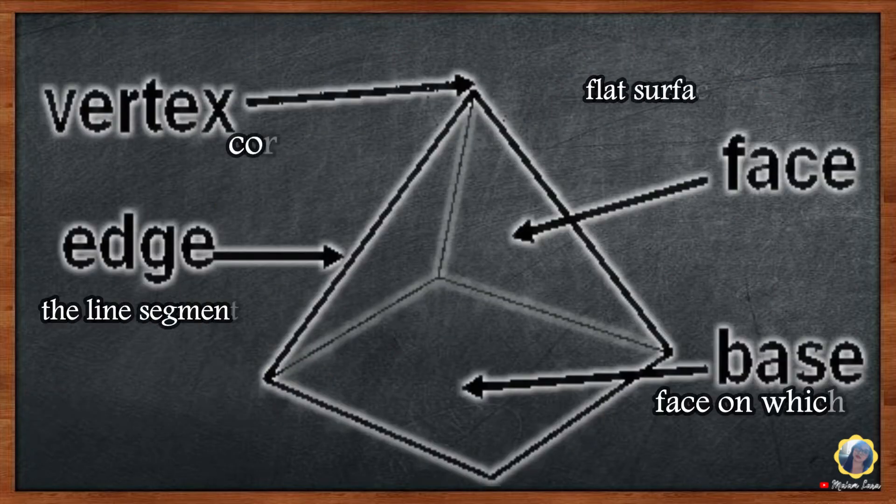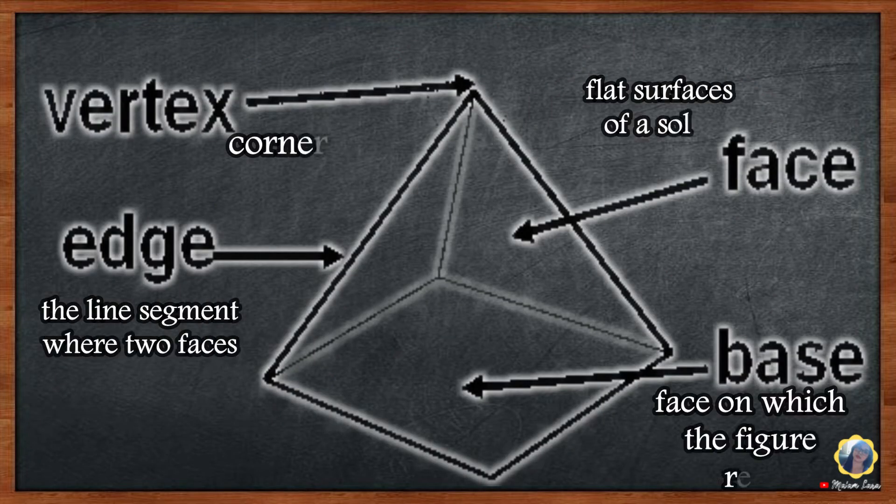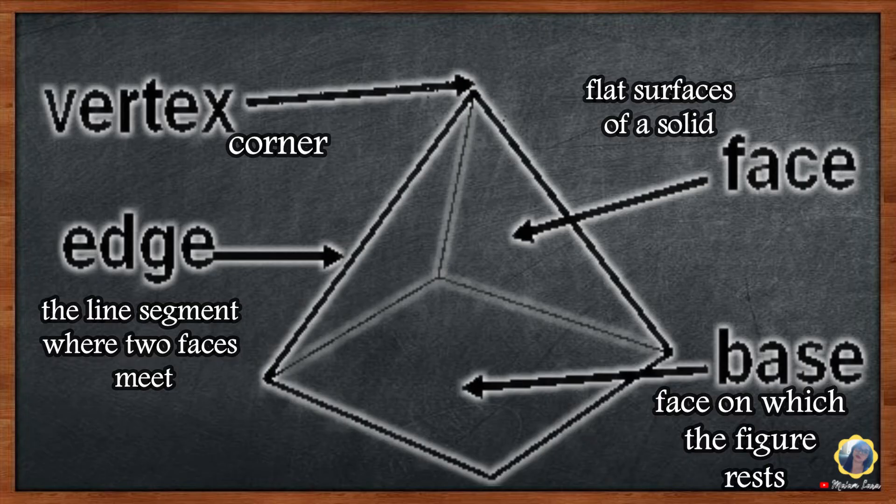The flat surfaces of a solid figure are its faces, or sides as they are commonly called. The base is the face on which the figure rests. The edge of a solid figure is the line segment where two faces meet. A vertex—vertices in plural form—is the corner that is formed where the ends of the line segments of two or more faces meet.